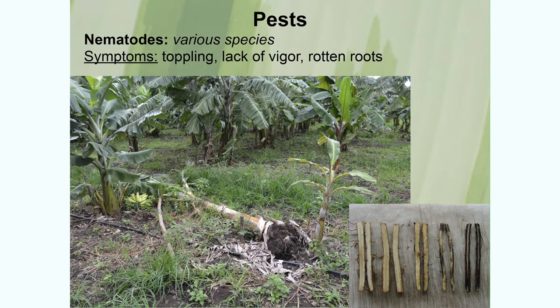Nematodes are even more difficult to diagnose than corm weevils because you really can't see them — they're microscopic worms that live in the soil and eat the roots. The sign of nematodes is typically toppling. Whereas corm weevils cause the corm to break in half, nematodes cause the corm to fall out of the ground because the roots are rotten — there's no more roots to anchor the plant. If you have plants falling over all the time, it's very possible it's nematodes. Digging up roots and cutting them lengthwise, you can see necrotic rotten portions.